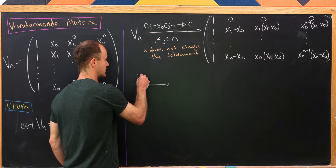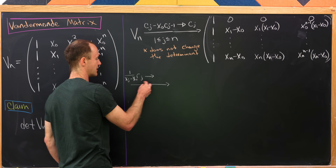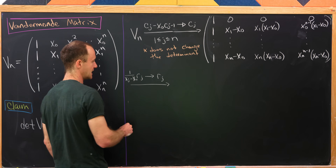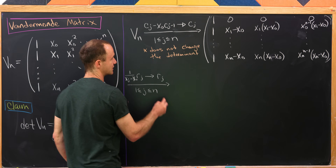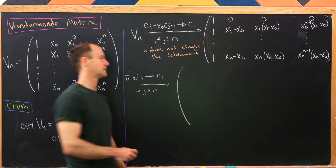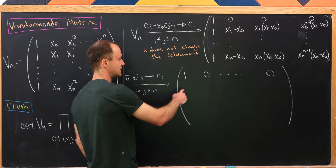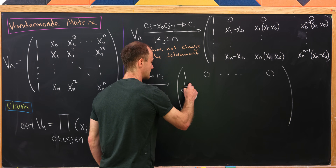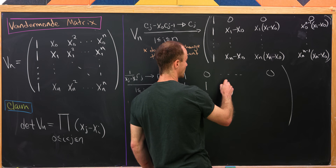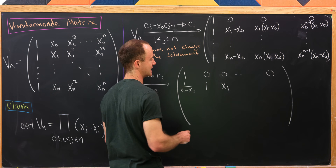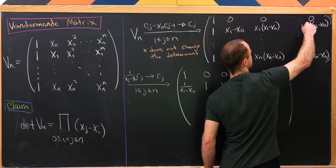So we'll take the jth row rj and multiply by 1/(xj minus x0) to get the new jth row, for j between 1 and n. The zeroth row stays as 1 followed by zeros. Row 1 becomes 1/(x1 minus x0), then 1, x1, all the way to x1^{n-1}. Row 2 becomes 1/(x2 minus x0), then 1, x2, down to x2^{n-1}. And the last row becomes 1/(xn minus x0), then 1, xn, down to xn^{n-1}.